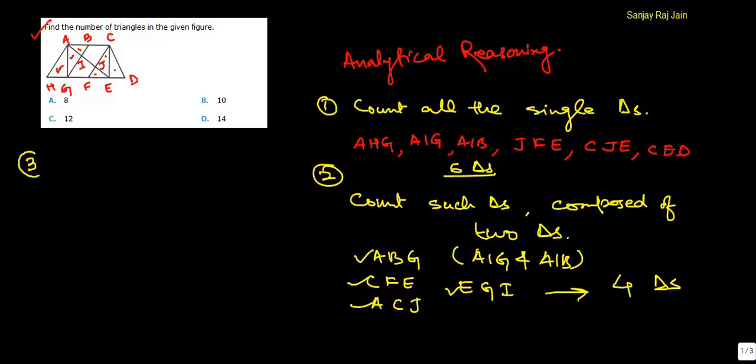So the next logical step would be to count the triangles that are composed of 3 triangles. A, C, E, A, G, E, and C, F, D. These 3 triangles are such triangles that consist of 3 triangles. So the number is also 3.